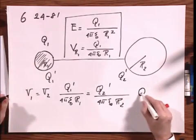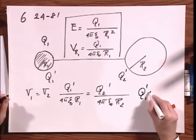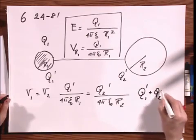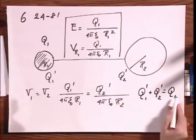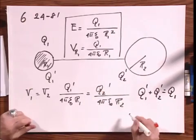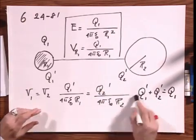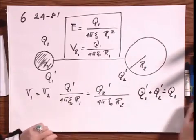And since you also know that Q1 prime plus Q2 prime equals Q1, you have two equations with two unknowns because you know the radii and so you can solve for Q1 prime and you can solve for Q2 prime.